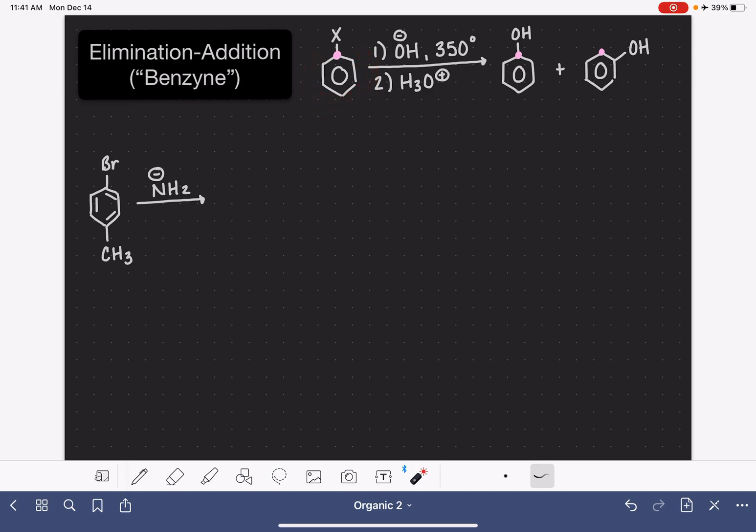Also, we can do this reaction using amide NH2- with NH3, step 2 H3O+. In this particular set of conditions, we'll be putting an NH2 group on the ring, also either on the same carbon or ortho to the carbon with the leaving group.